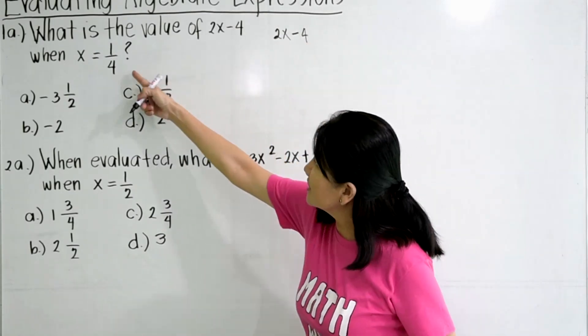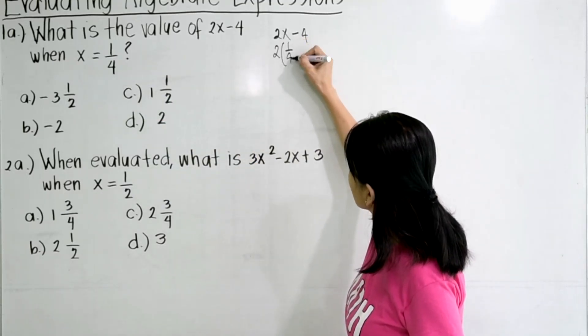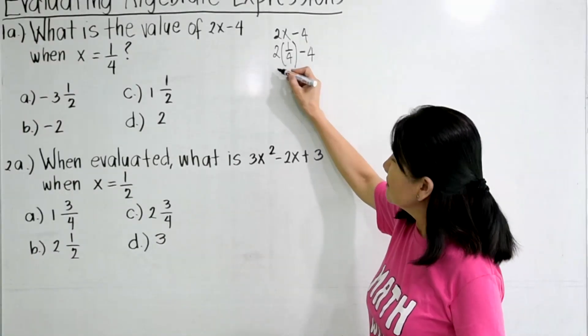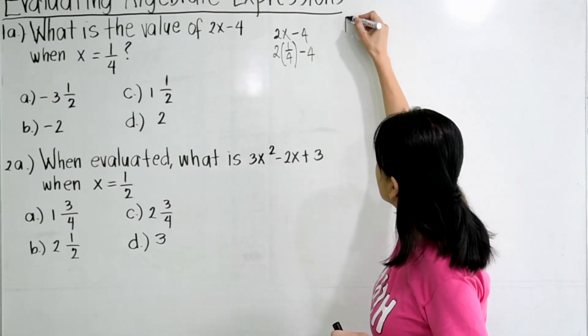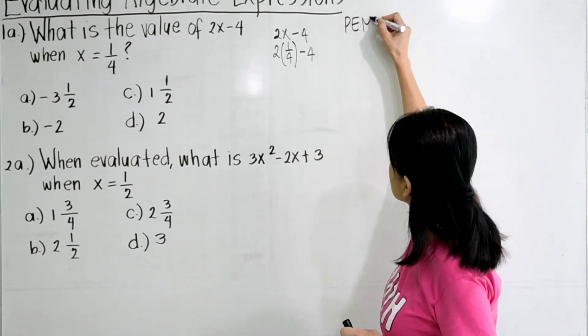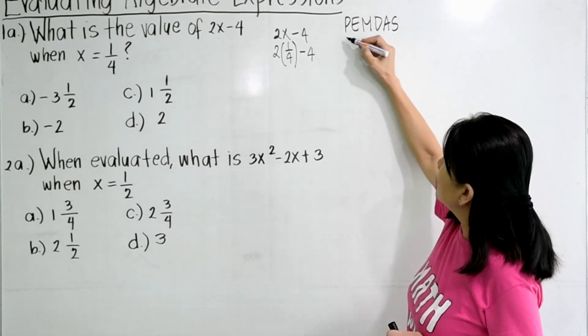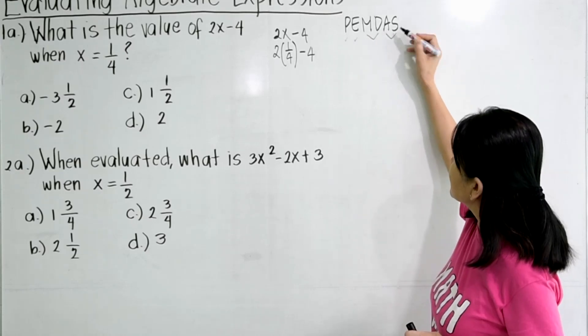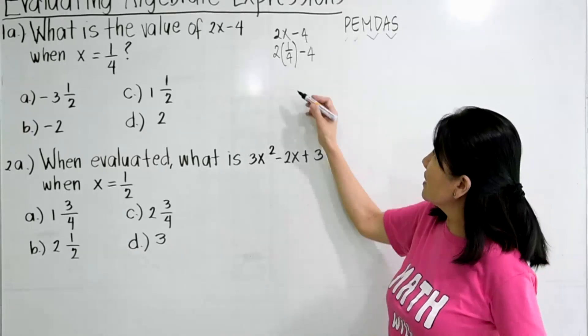Substitute x equals 1/4, so this is 2 times 1/4 minus 4. Then, always apply the order of operations, which is PEMDAS. You do all the parentheses, exponents, multiplication, division, addition, subtraction, from left to right, whichever comes first.